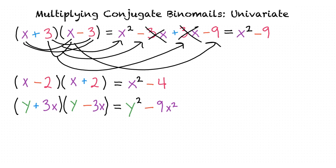So to multiply conjugate binomials, square the first term in each binomial and subtract the square of the shared second term to get the answer.